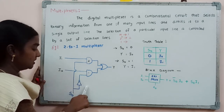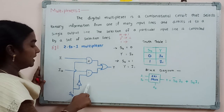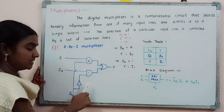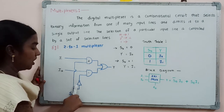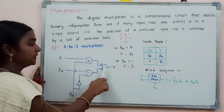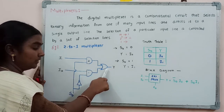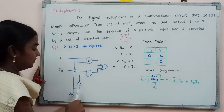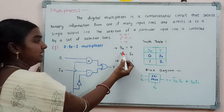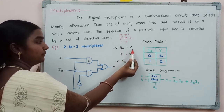In this logic diagram, the 2-to-1 multiplexer consists of a NOT gate, 2 AND gates, and an OR gate. First, we will consider the case where selection line s0 equals 0.